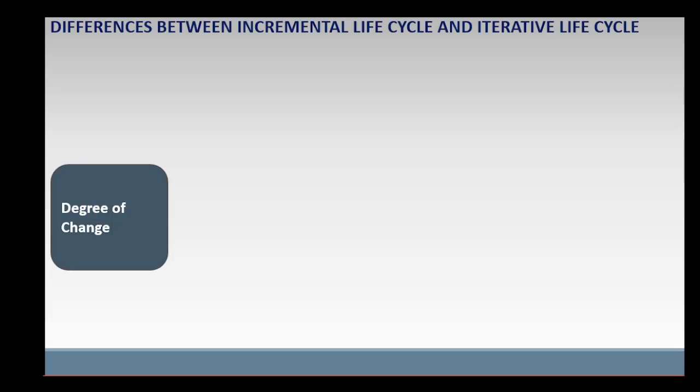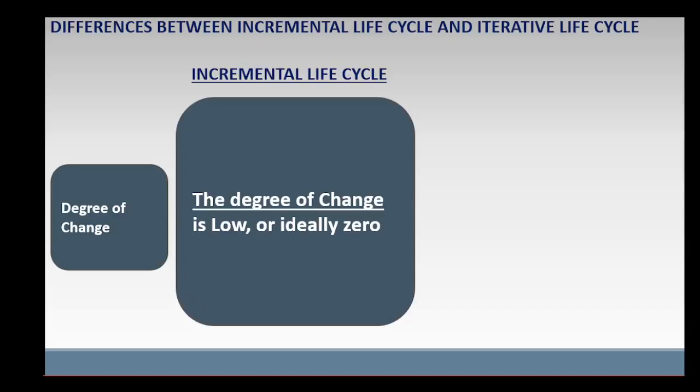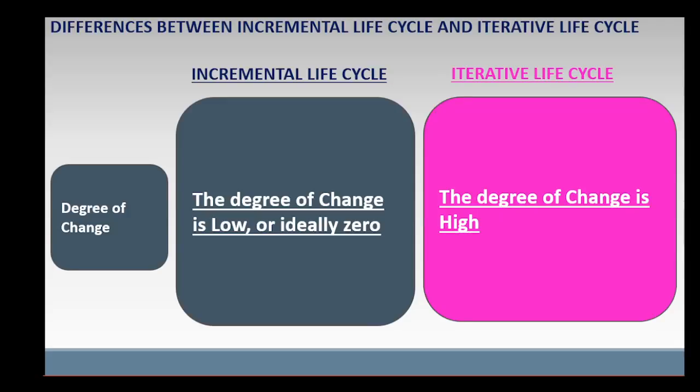In terms of degree of change, in incremental project life cycle, the degree of change is low or ideally zero. That is, during the project, an increment delivered in one cycle is not expected to be modified or refined in another cycle. In iterative project life cycle, the degree of change is high. That is, a product version or prototype is modified or refined in each cycle until the last cycle, when the desired or final product version is delivered.